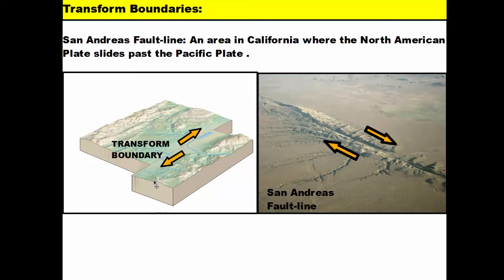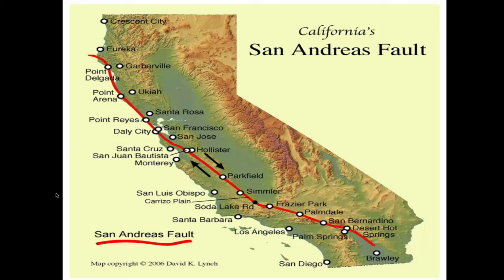Now let's move on to our last boundary — transform boundaries. Transform boundaries are different because divergent boundaries move away from each other and convergent boundaries collide into one another, but transform boundaries do neither one of those. They just slip past one another. For example, in California there's a major fault line called the San Andreas Fault Line, which is actually the Pacific Plate meeting with the North American Plate. Based on their motion, they're not going to necessarily collide and create a huge mountain range — instead, one part of the plate moves more north and the other moves south, so they tend to slip past one another.